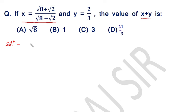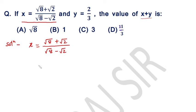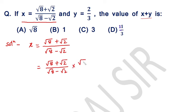Let us start. x equals square root of 8 plus square root of 2 over square root of 8 minus square root of 2. The trick is we will multiply the numerator and denominator both by square root of 8 plus square root of 2 over square root of 8 plus square root of 2.